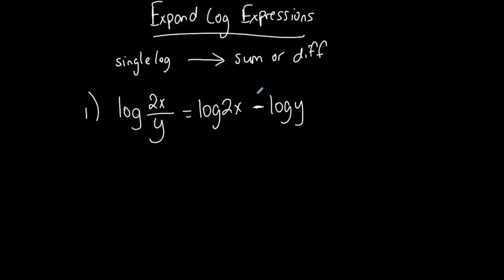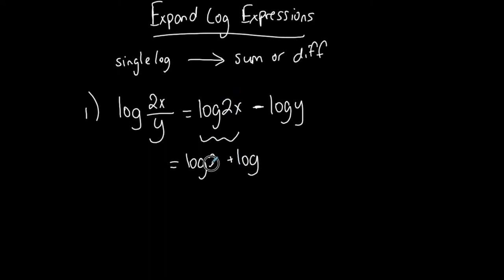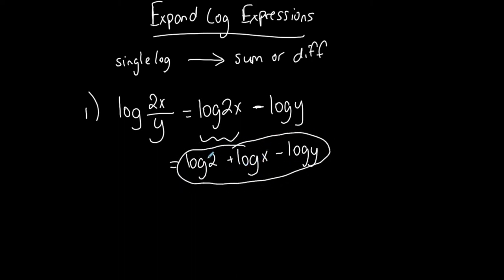Now I've started to expand this, rewriting it as a sum and difference of separate logs. But I'm going to keep going because I notice there's a product: 2 times x. That means I'm not completely expanded. This part can be expanded even further. A product, when expanded, becomes a sum of separate logs — keeping the same base. The first part of the product goes with the first log and the second part goes with the second log. I can't do anything more because there's no exponent and no product or quotient left. So the fully expanded form is: log 2 + log x − log y.